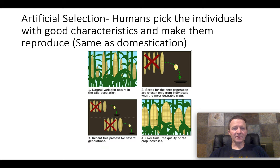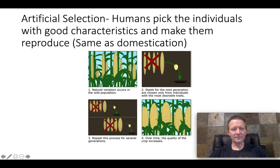Artificial selection is when humans are selecting for certain characteristics that we feel are beneficial. We continually pick those individuals with the characteristics that we like to make them reproduce together, and we get more of that variety in the future.